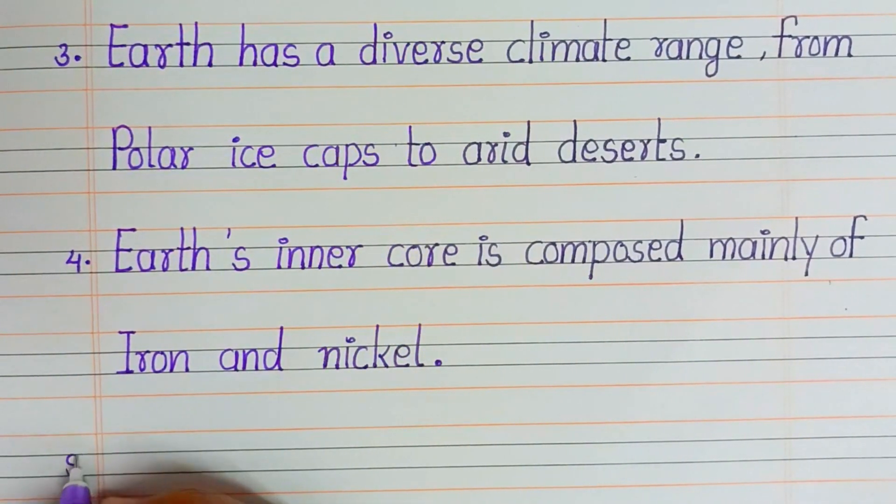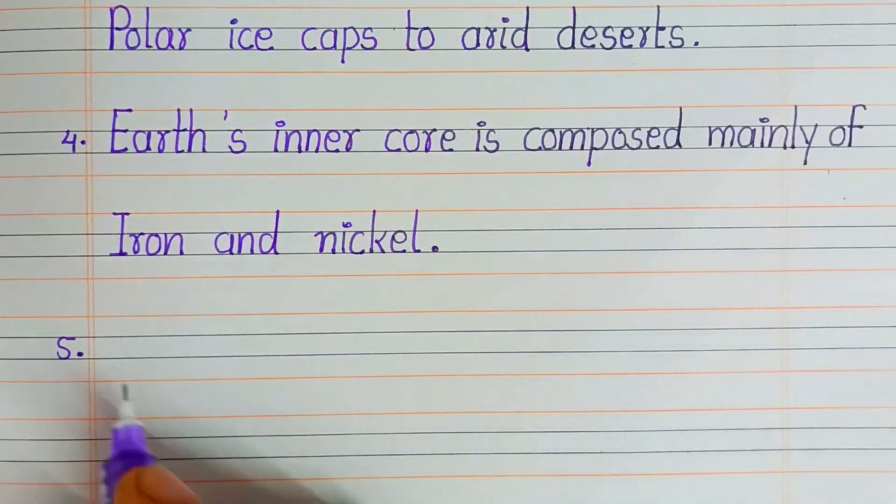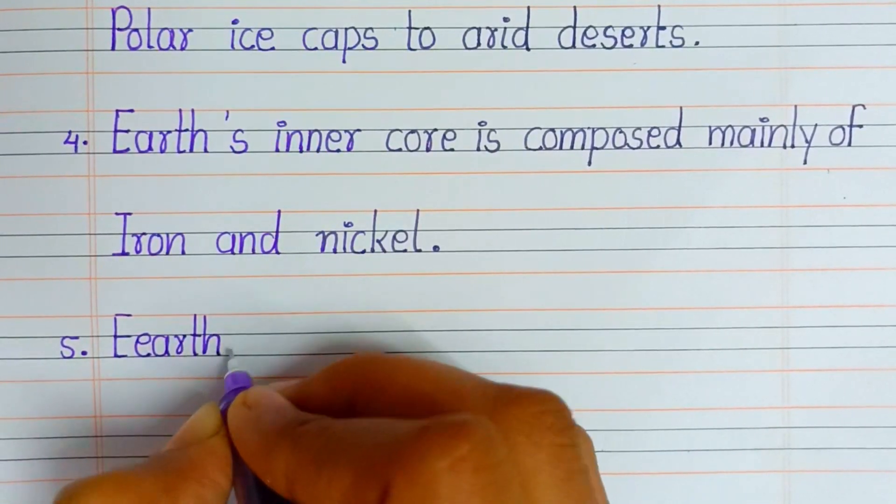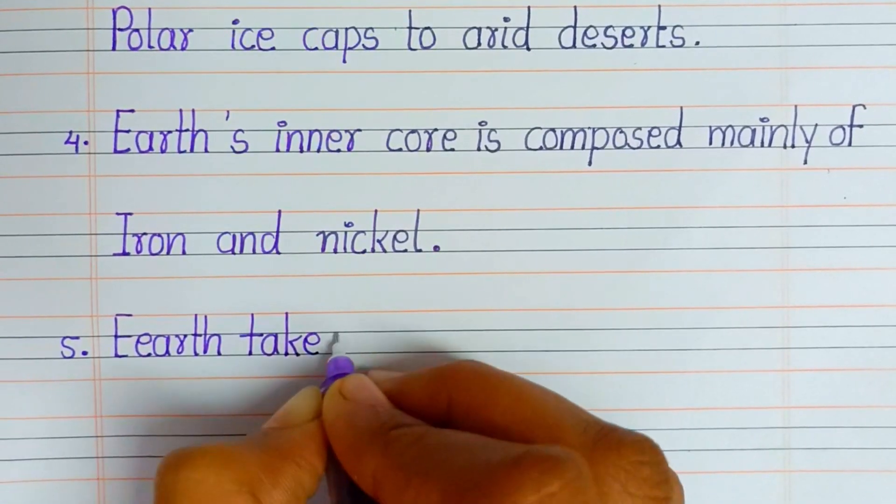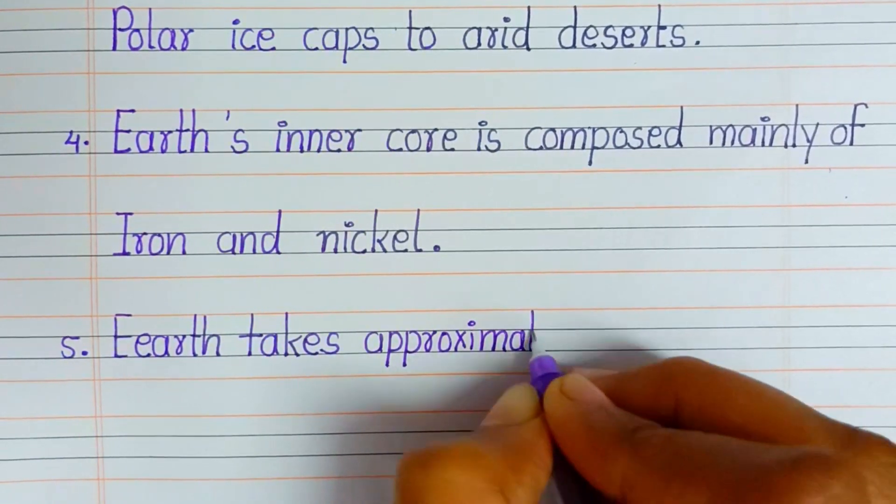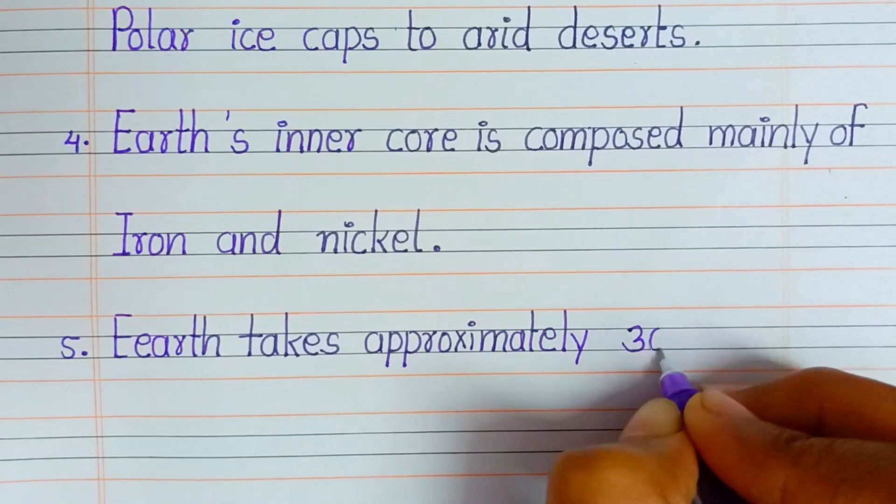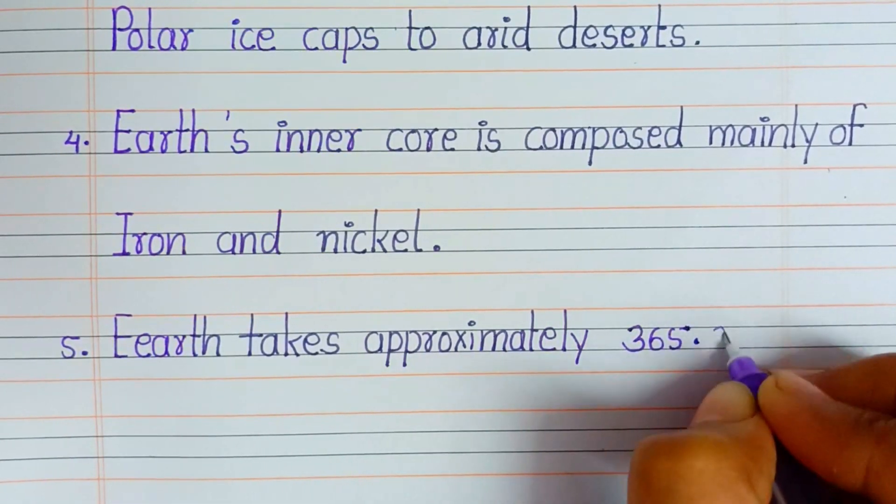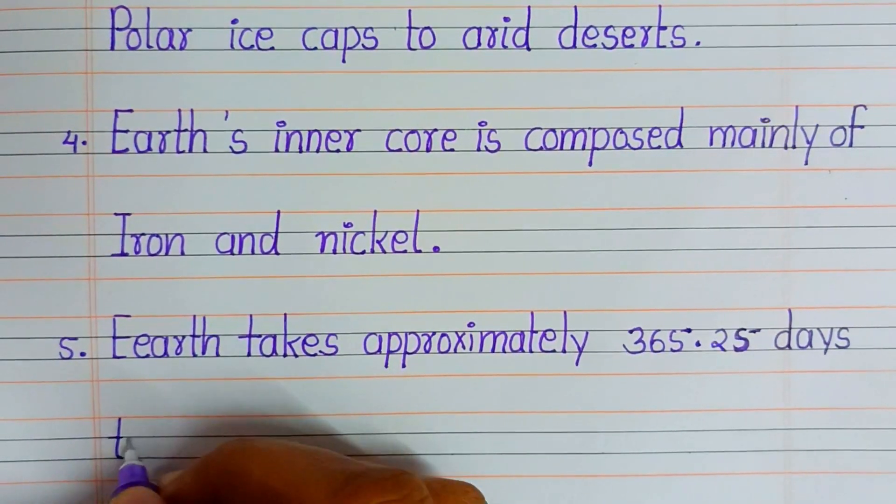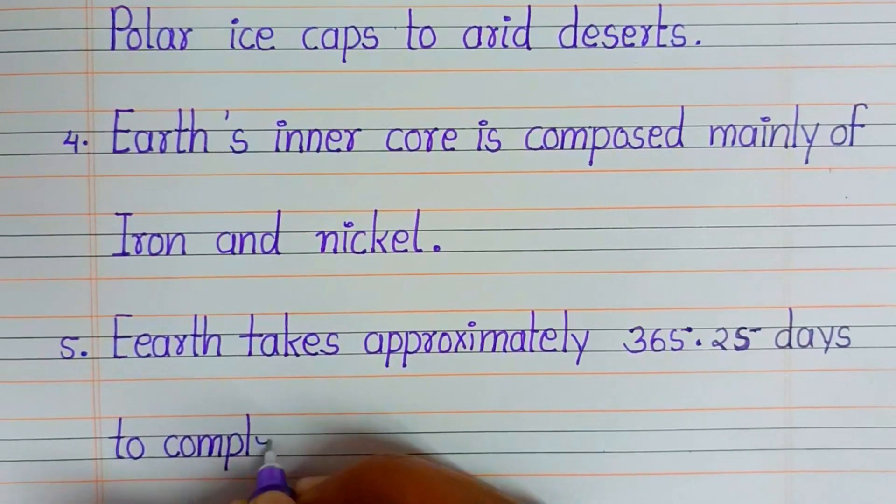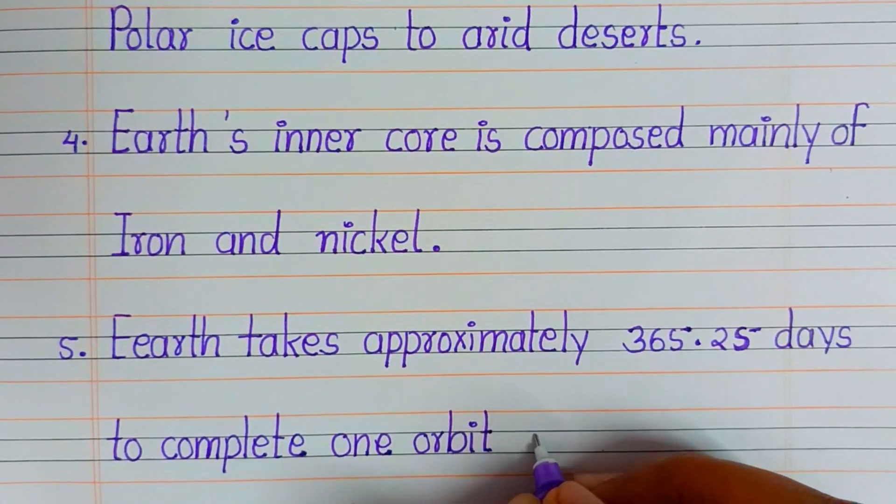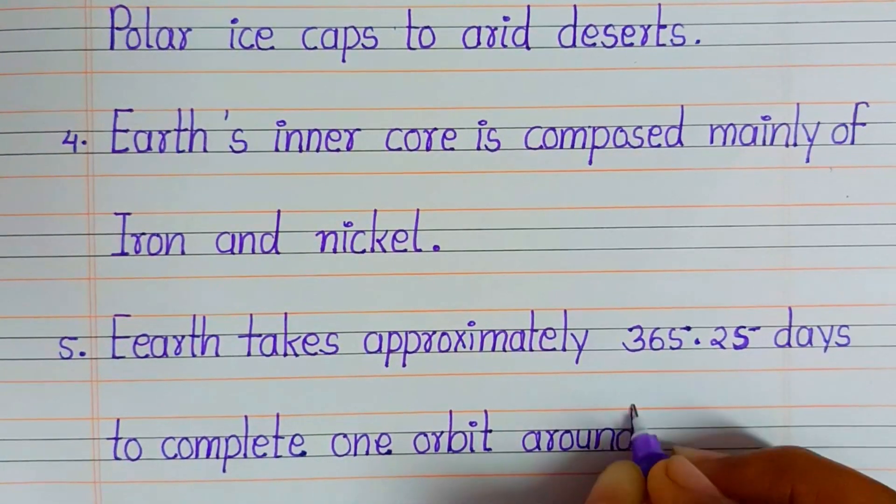Fifth point is: Earth takes approximately 365.25 days to complete one orbit around the Sun.